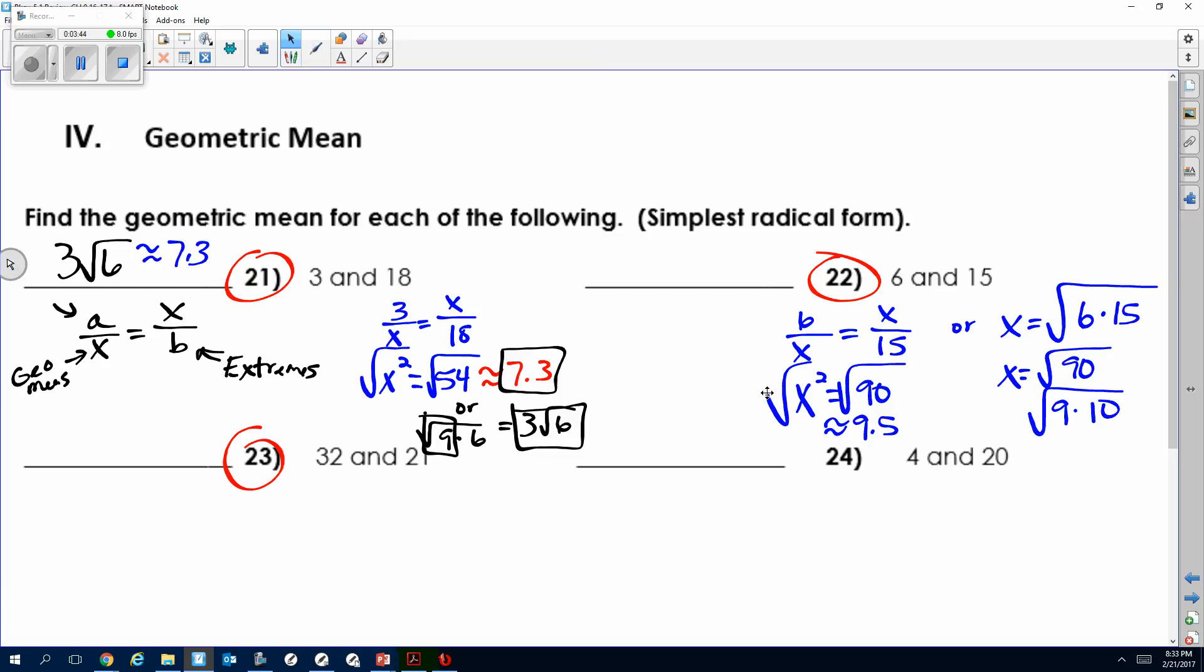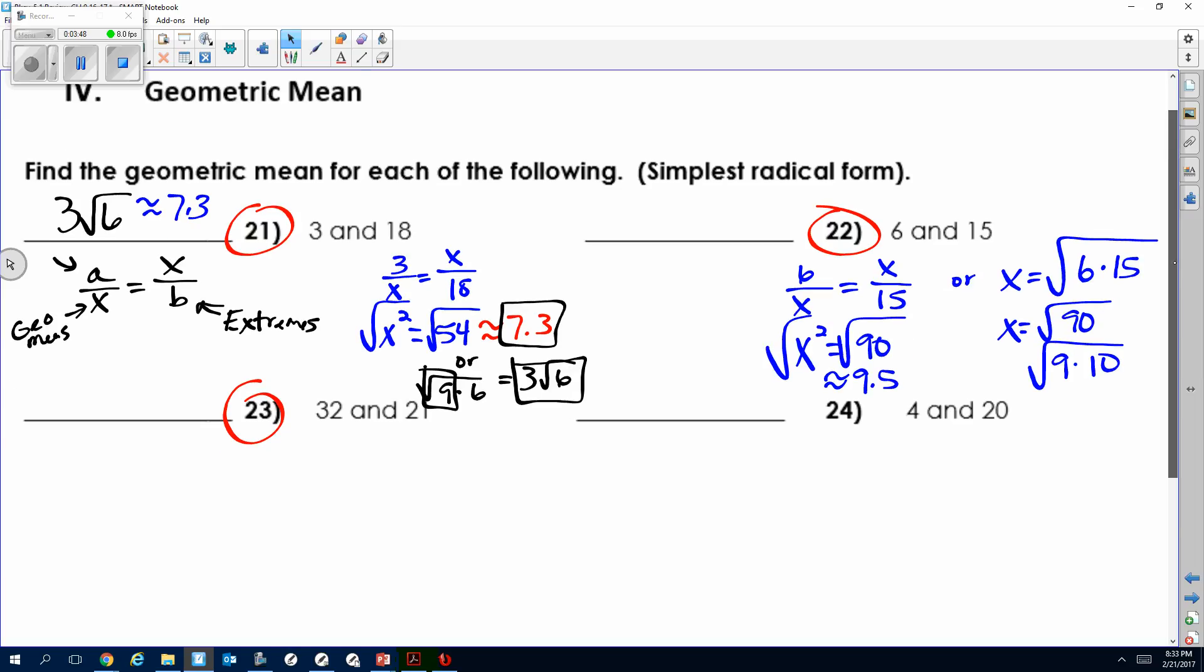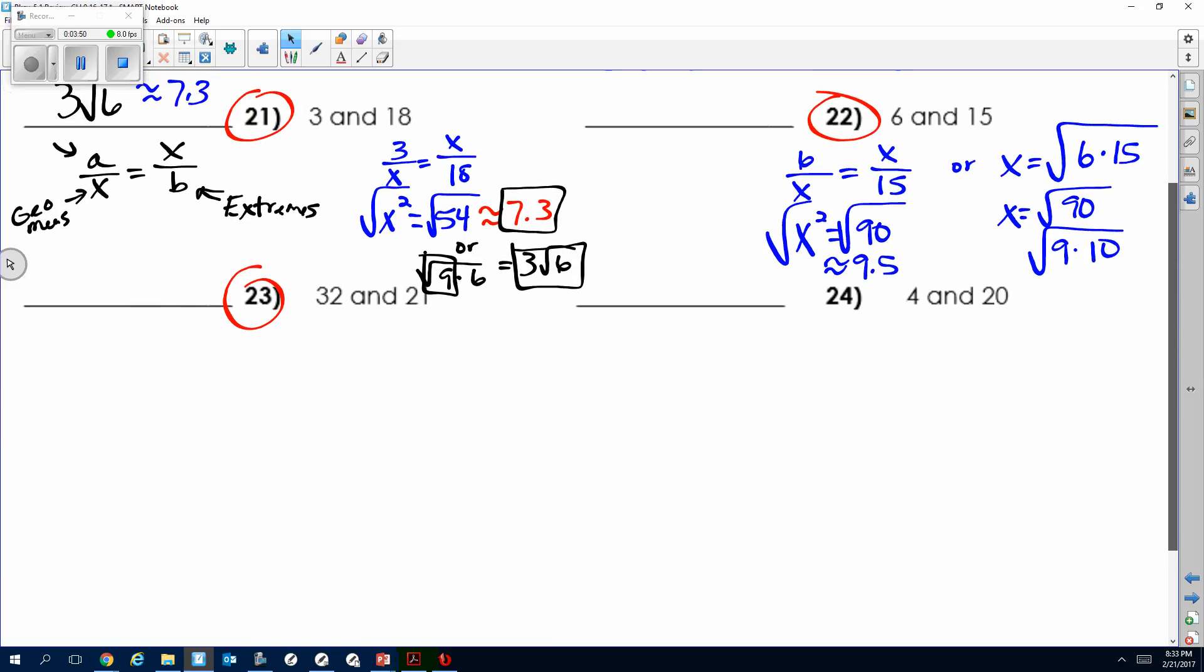So that's your hint—see if you can get that step. I'm going to make sure we have 23 done correctly. So I'm going to do the proportion. We got 32 over x equals x over 21. Cross multiply, we get x squared equals 672. And now we're going to take the square root.